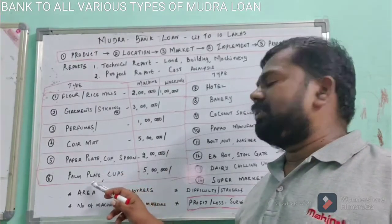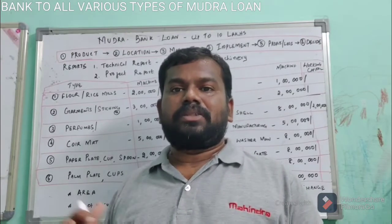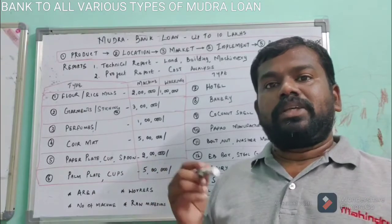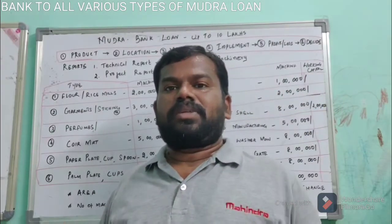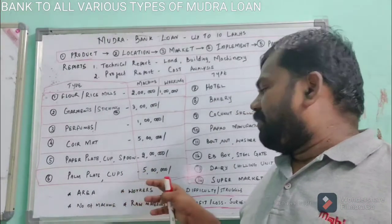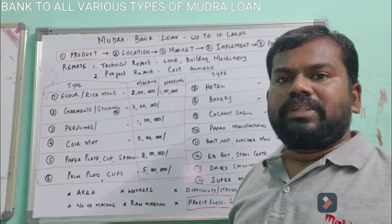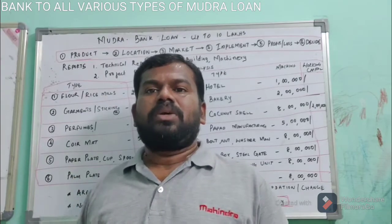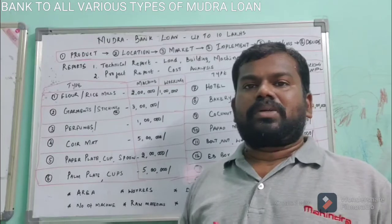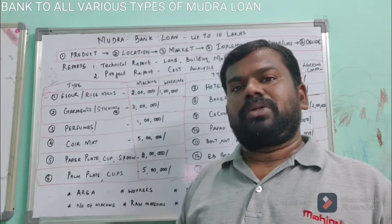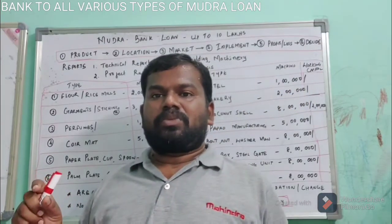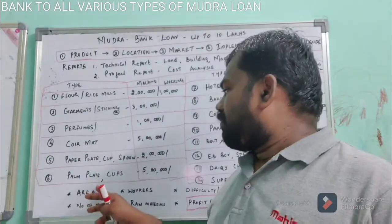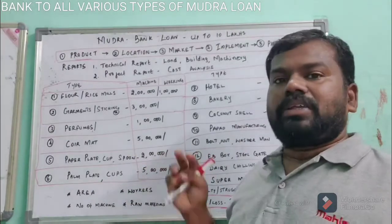Similar to paper plates, palm plates are also a good business. Temples give prasad on palm leaf plates. You source palm leaves from Karnataka, Kerala, and Coimbatore area, soak them in water, and press them into plates of 8, 6, or 10 inches. This fetches very good income — if you supply to around 15 temples and sell in bulk to wholesale markets in Erode, Salem, or Chennai, the manufacturing cost per plate is around 1.5 rupees while the wholesale selling price is around 3 rupees, nearly double. It is a very good business, and details on machinery and inputs are available on the Mudra website.